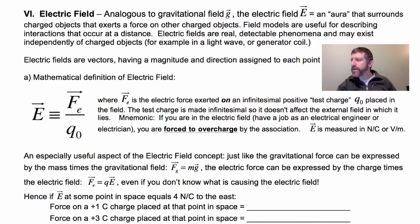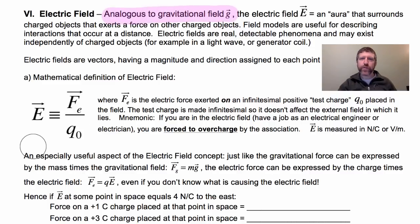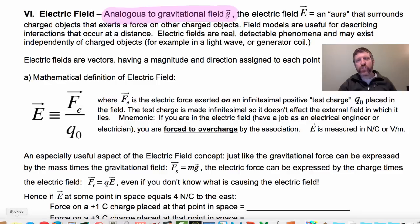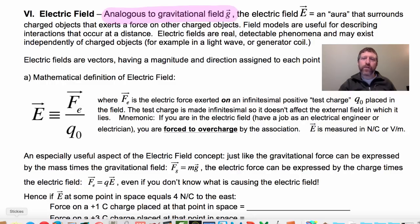Electric fields are analogous to gravitational fields, and we express the gravitational field by g, that little g vector. g can be measured in meters per second squared, but typically we prefer to measure it in newtons per kilogram, because that's a way to express a field — how many newtons of gravity would be on it for each kilogram you put in that field.